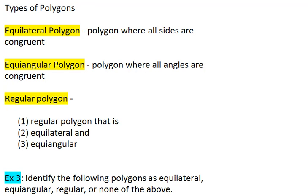For special types of polygons, we look at three special types. The first is an equilateral polygon, and this is a polygon where all sides are congruent.